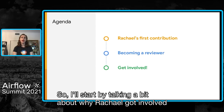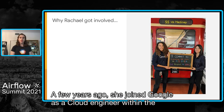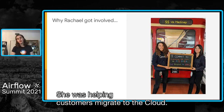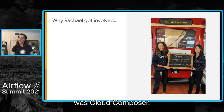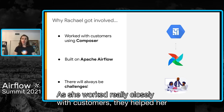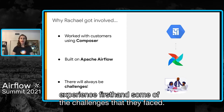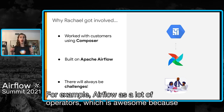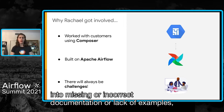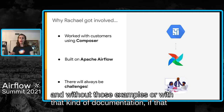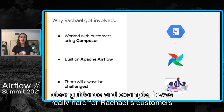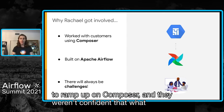I'll start by talking about why Rachel got involved in the first place. A few years ago she joined Google as a cloud engineer within the professional services organization. She was helping customers migrate to the cloud. The first project that Rachel worked on with a customer was Cloud Composer — GCP's hosted managed version of Apache Airflow, which is why we're talking about it today. As she worked closely with customers, she experienced firsthand some of the challenges they faced. For example, Airflow has a lot of operators, which is awesome because it makes integrating with services super easy, but sometimes you'll run into missing or incorrect documentation or a lack of examples. Without that clear guidance, it was really hard for Rachel's customers to ramp up on Composer, and they weren't confident that what they were building was in line with best practices.